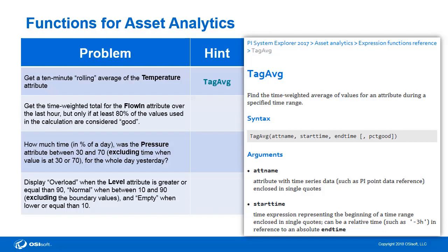In this syntax, we can see we need an attribute name, a start time, and an end time, and an optional parameter is a %good. Writing this out, we can see that we want to get a 10-minute rolling average for the temperature attribute. Our attribute name is going to be temperature. Our start time is going to be 10 minutes ago from now, which would be star — meaning now — minus 10m. And our end time is now, to complete the 10-minute rolling average time period. We can see that we're not asked to specify any %good, so we'll leave the optional parameter out.